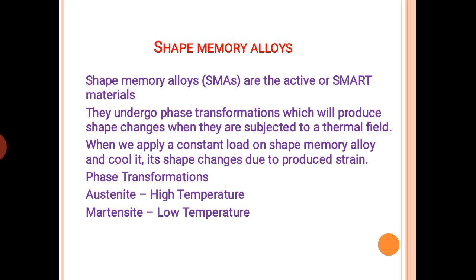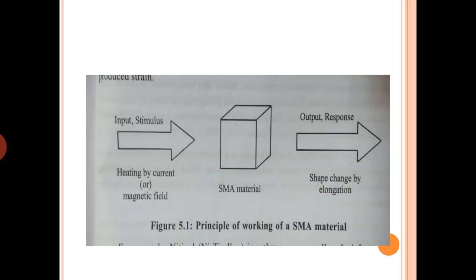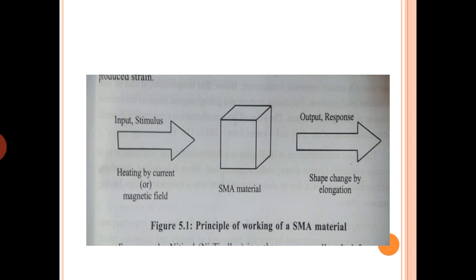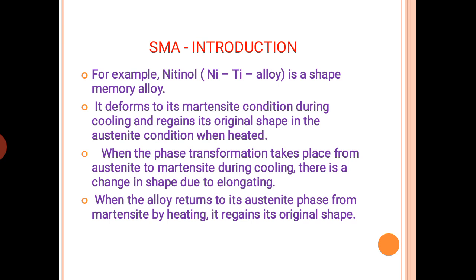When we talk about phase transformation, we have two phases: austenite, the high temperature phase, and martensite, the low temperature phase. This diagram illustrates the working principle of an SMA material — when you have an input stimulus, for example a stress, and when the material is heated by current or magnetic field, the output is a response which is a change in shape or elongation.